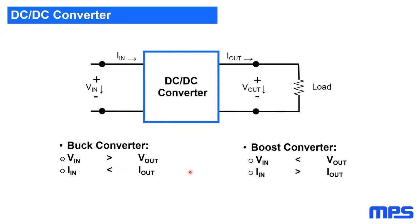DC-DC converters are used to transform an input voltage level to a different level on the output side. The most common topologies for non-isolated DC-DC converters are buck converters and boost converters. Buck converters are also called step-down converters — going from a high voltage level to a low output voltage. Boost converters are step-up converters — going from a low input voltage to a high output voltage.